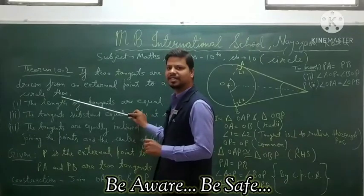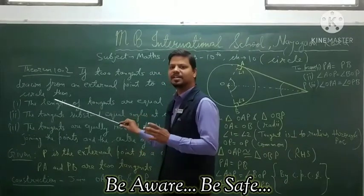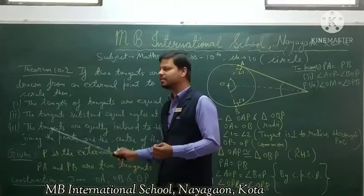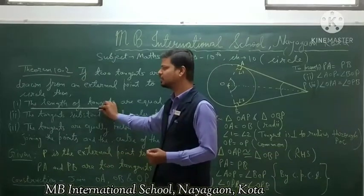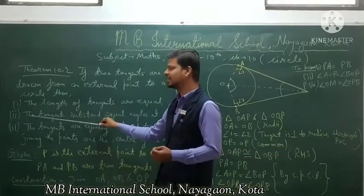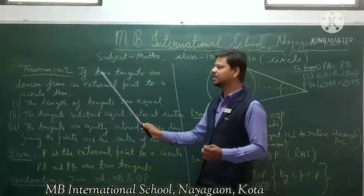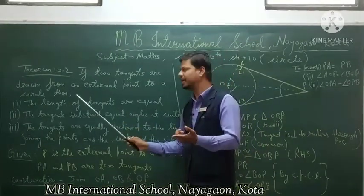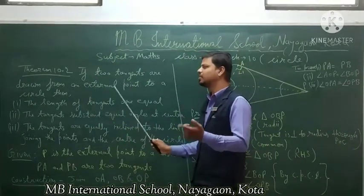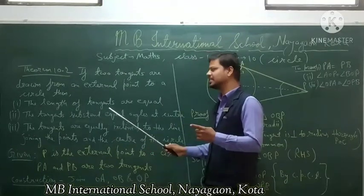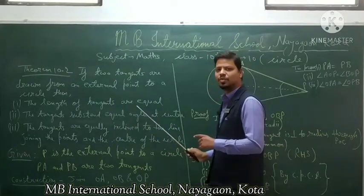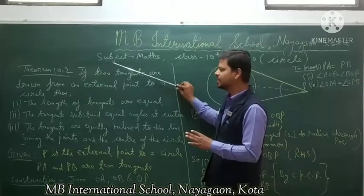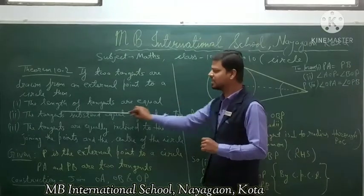Theorem 10.2 states that if two tangents are drawn from an external point to a circle, then the length of the tangents are equal. This is the first statement of Theorem 10.2.